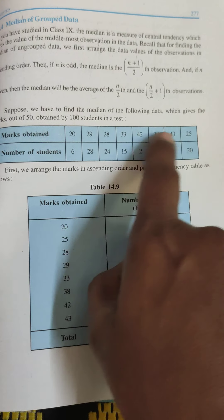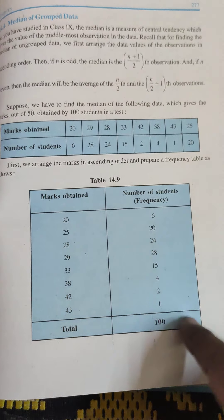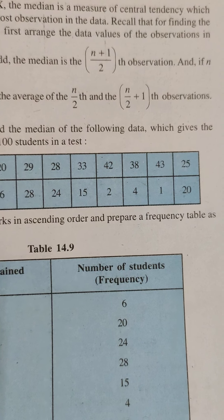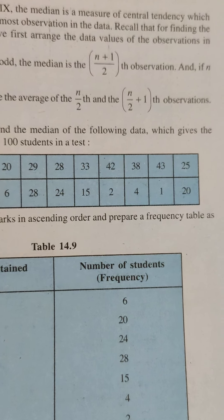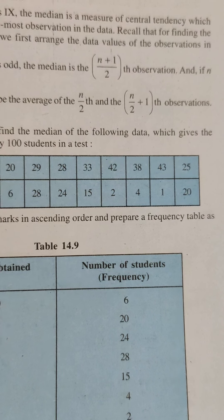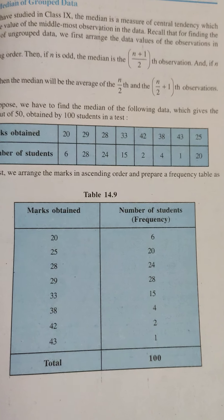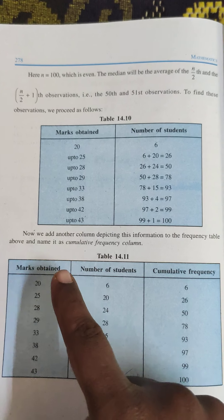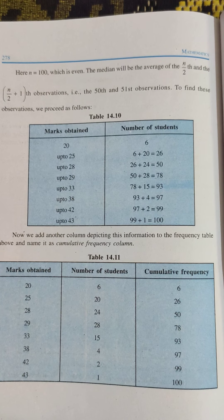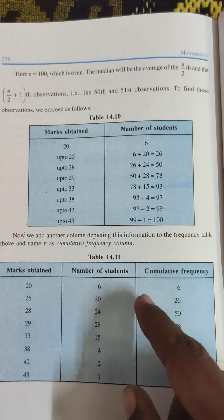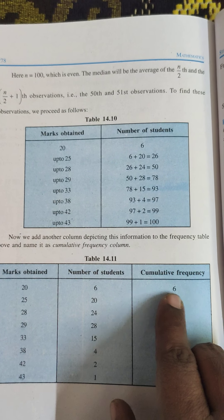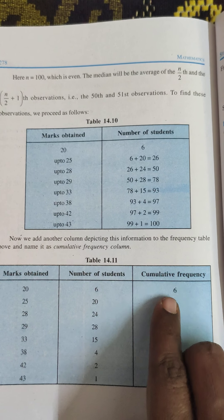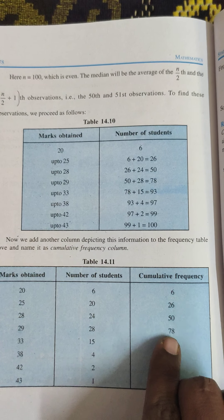For this example, marks obtained are given in the first row and frequencies in the second row. The total sum is 100, which is even, so we take the average of the 50th and 51st terms. We build a cumulative frequency table by adding frequencies step by step: the first cumulative frequency is 6; next is 6 + 20 = 26; then 26 + 24 = 50; then 50 + 28 = 78; then 78 + 15 = 93, and so on up to 100.